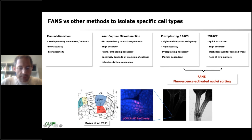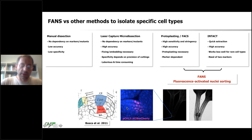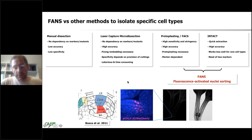The system we have used most is an H2B-mCherry reporter driven by the CLAVATA3 promoter, which is a stem cell reporter. You can see the expression of this reporter at the tip of the dome of the shoot apical meristem. When I show examples during the presentation, it will most likely be from this construct.